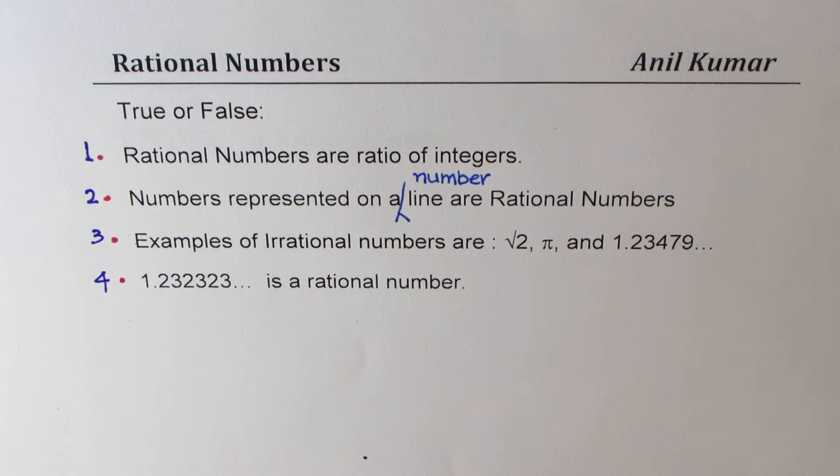Question 4: 1.232323 and so on is a rational number. I hope you must have got your answers.